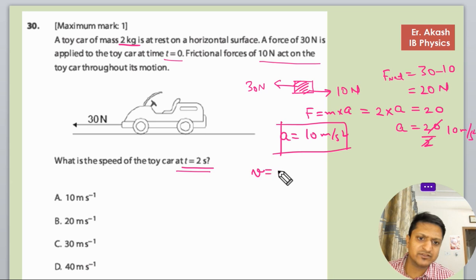So now we will use the first SUVAT equation and the initial velocity is 0. So a into t, that is a is 10 meter per second squared and time is 2 seconds. The final velocity will be 20 meter per second.